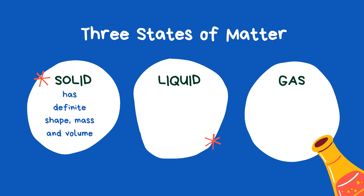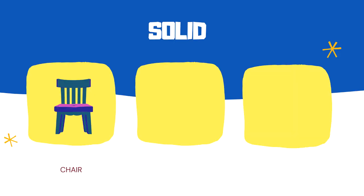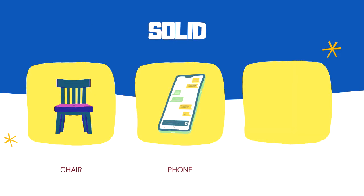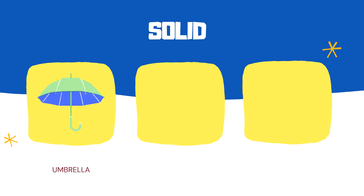Solids have definite shape, mass, and volume and do not conform to the shape of the container in which they are placed. Right now, you're probably sitting on a chair, holding your phone, or a mouse — those things are solid materials. Other examples of solid materials include umbrella, glass, and pen.